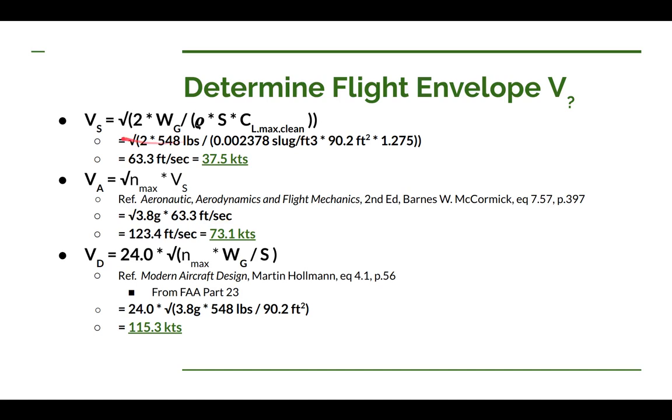The stall speed is pretty easy. This is our lift equation rearranged so that V sub S is on the left hand side. WG is our weight, 548 pounds. Rho air is our air density, 0.002378 slugs per cubic foot. The surface area of our wing at 90.2 square feet and our maximum coefficient of lift is 1.275. When you calculate all that out, it gives you 37.5 knots.